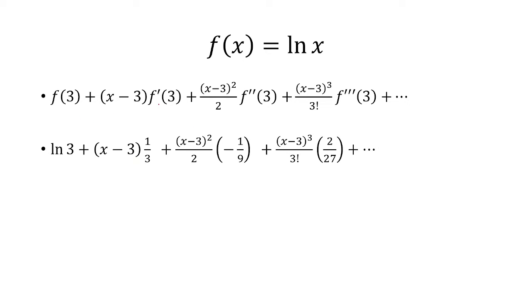f prime of x was 1 over x, so we replace that with 1 over 3. f double prime of 3 was negative 1 over x squared. When we plug in 3 there, you get negative 1 over 9. And the third derivative was 2 over x cubed. When we place x equals 3, we got 2 over 27.